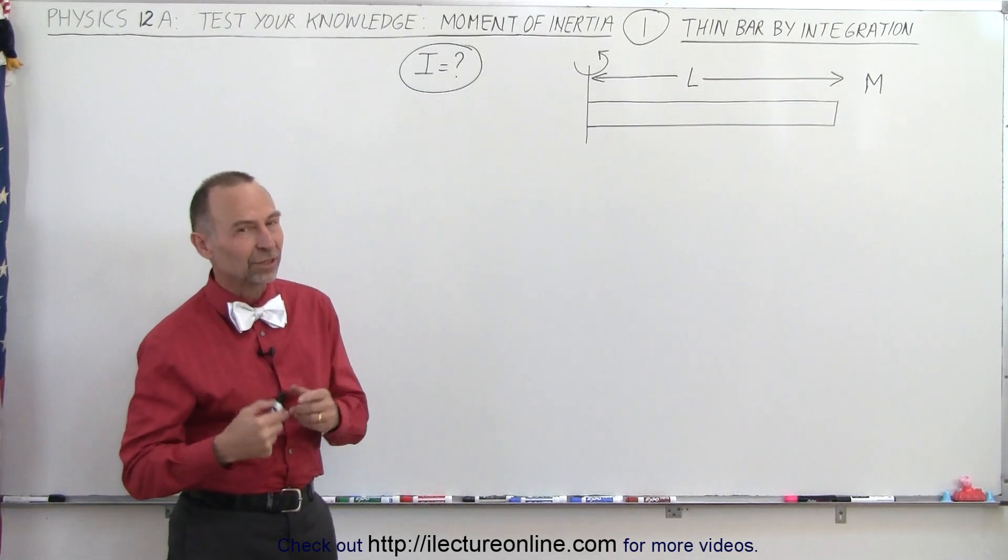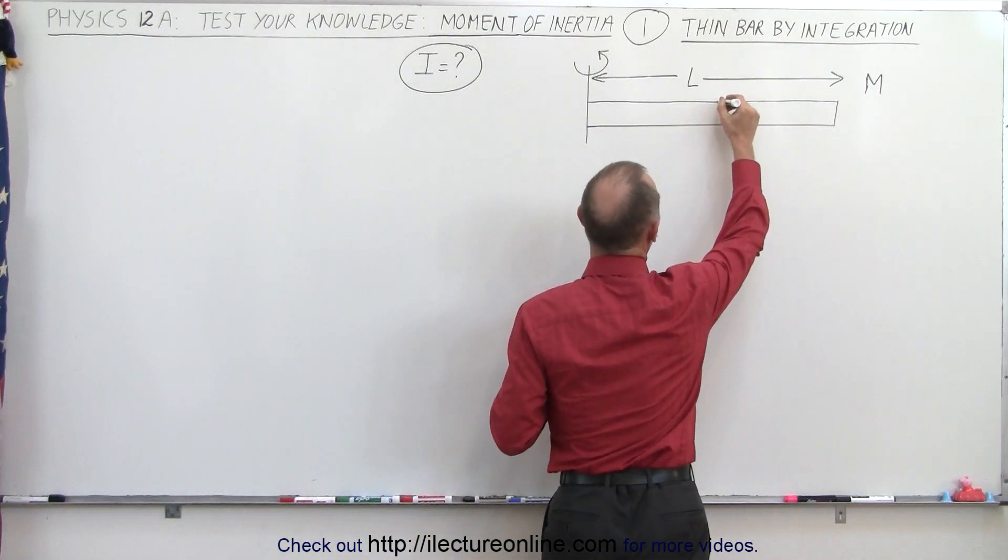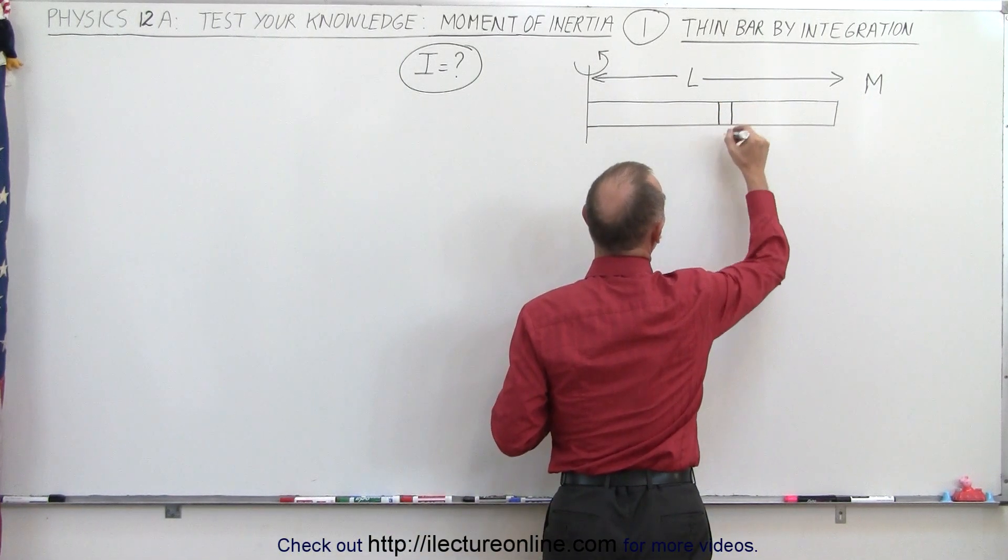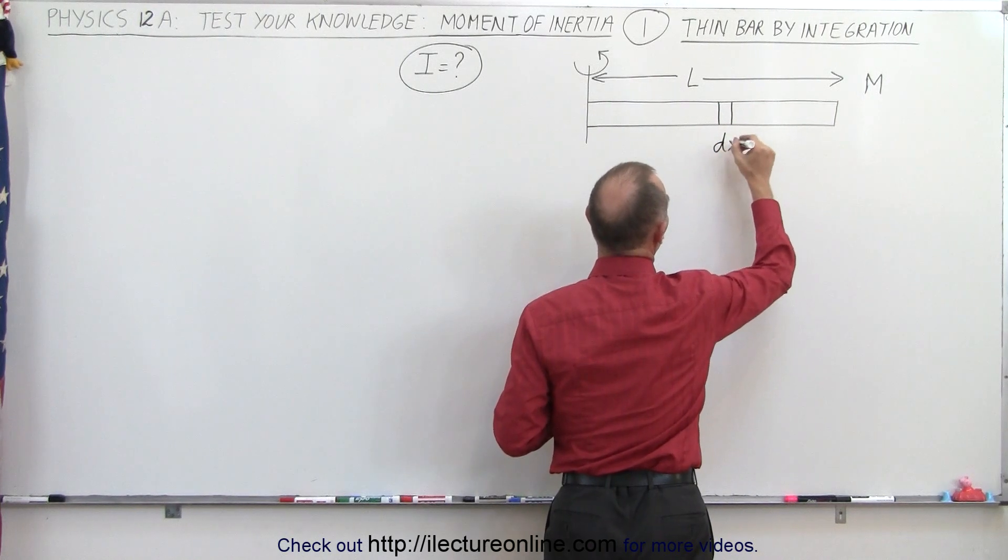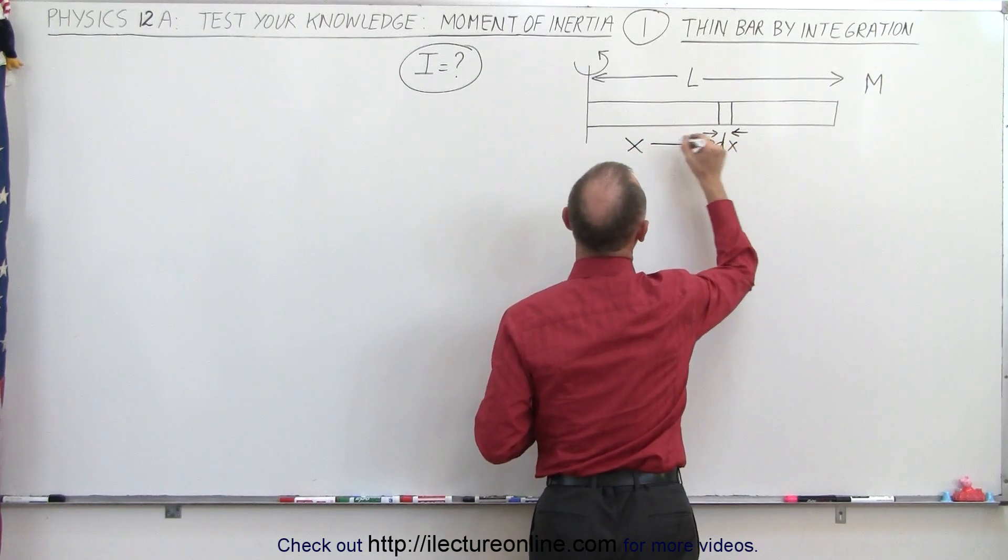Let's figure out by using calculus. So what we're going to do first is take a small little element of this bar. We'll call a small little dx. So that's the thickness of that little segment, and we know that it's a distance x away from the point of rotation.